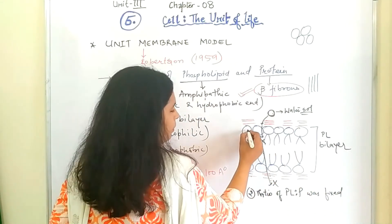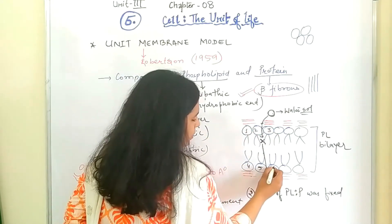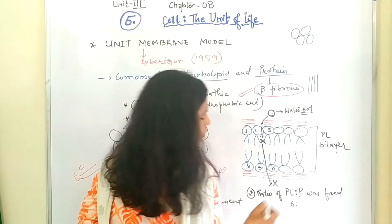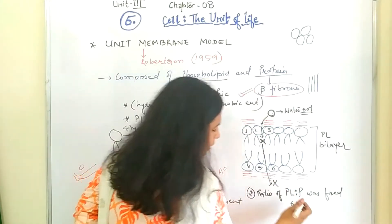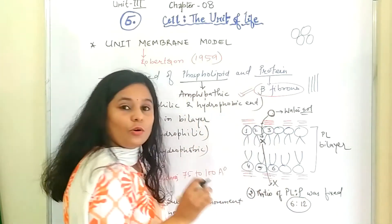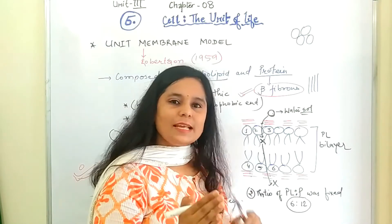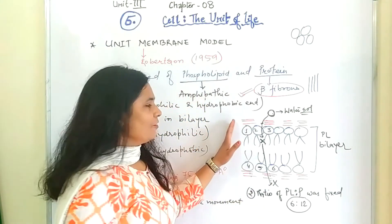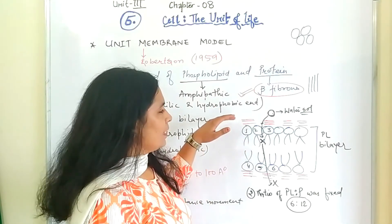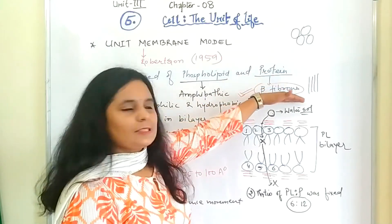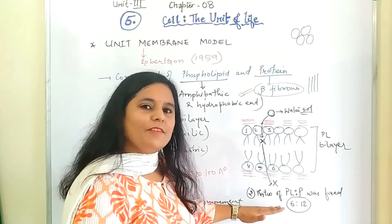So second drawback was the ratio of phospholipid to protein was fixed. It means if we number the phospholipid, there are 6 molecules of phospholipid, whereas protein, there are 12. So this ratio of phospholipid and protein is fixed. And there is no chances of change in the ratio. Because of that, if they will not change the ratio and they will not change the position, there is no chance of these molecules, especially water-soluble molecules, can pass through the membrane. So this was also a very big drawback.